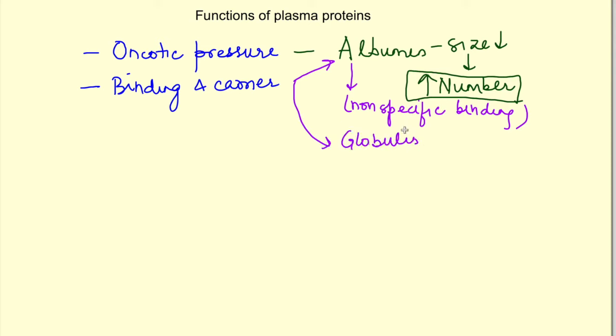Then there is globulin. Actually, it is the alpha and beta types of globulin which act as carrier proteins. These globulins, in contrast to albumin, bind with specific substances. Albumin binds non-specifically, but globulin binds with specific substances. So there will be a globulin which binds with thyroid hormone - thyroid-binding globulin, and steroid-binding globulin.